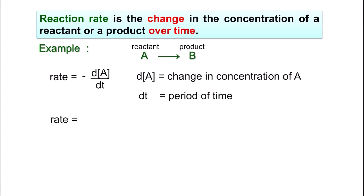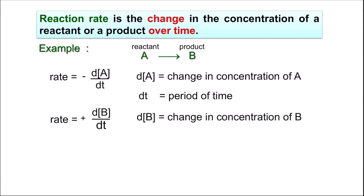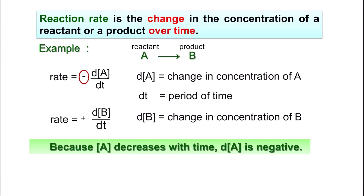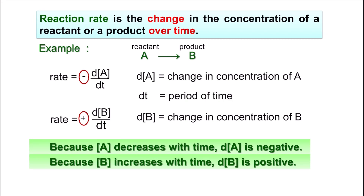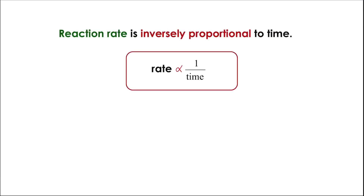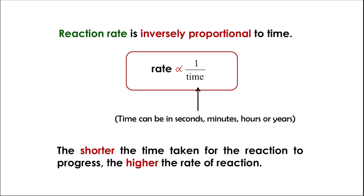For the product, by the end of the reaction its concentration increases, so the sign will be positive: positive d[B] over dt, where d[B] is the change in concentration of B. To summarize: negative sign because concentration of A decreases with time; positive sign because concentration of B increases with time. The unit for rate is mole per liter per second, or molar per second. Reaction rate is inversely proportional to time — the shorter the time taken, the higher the rate of reaction.